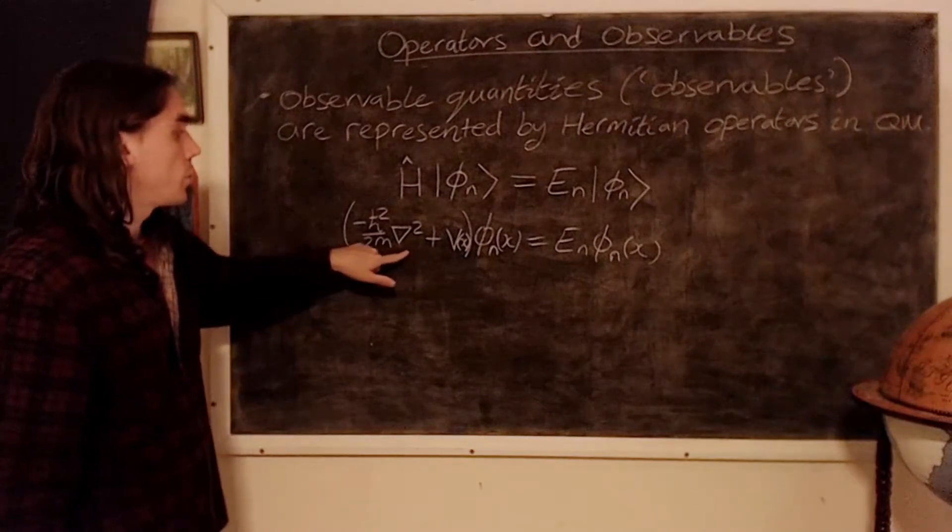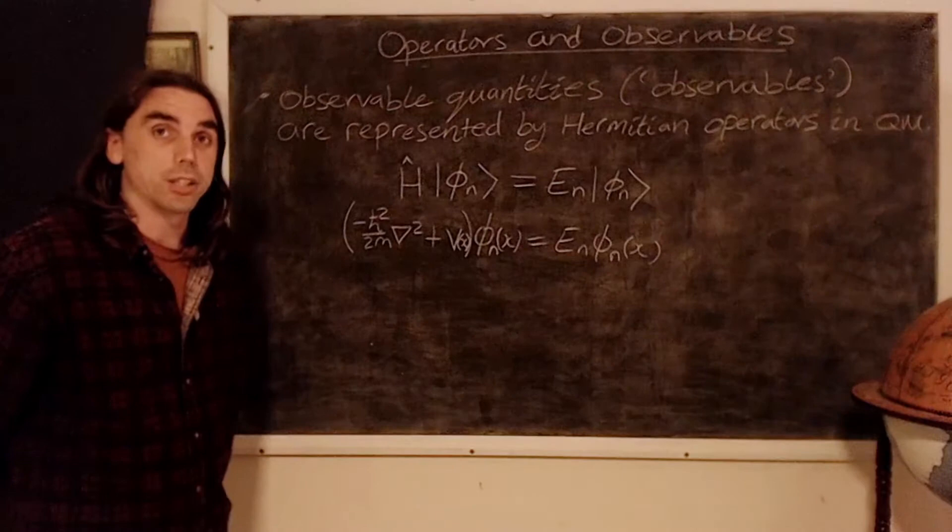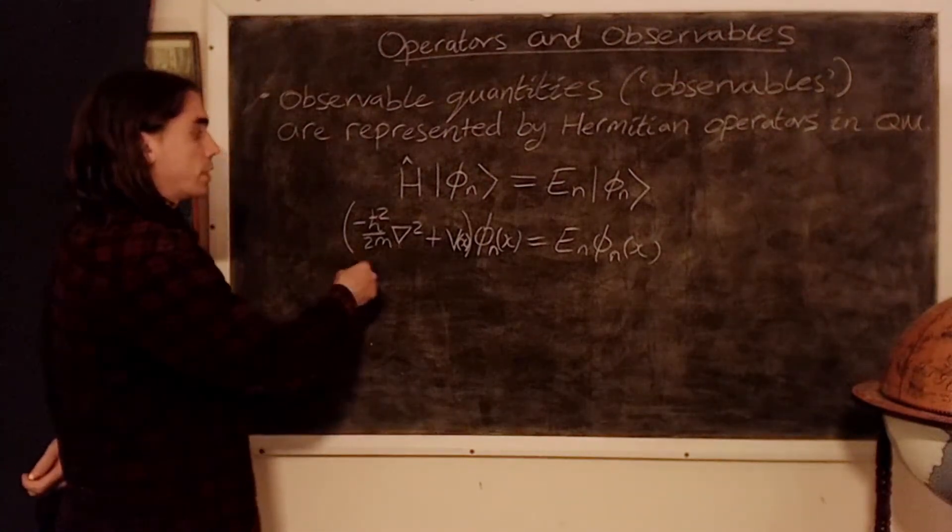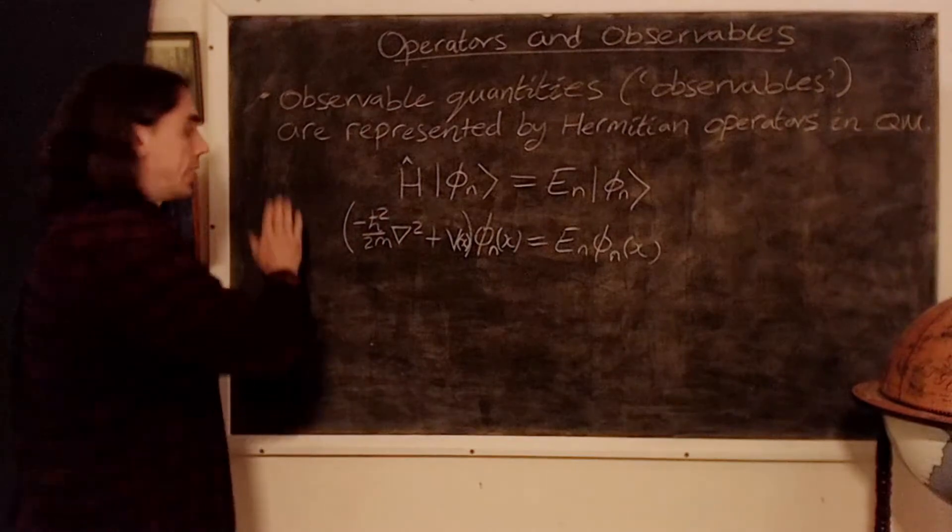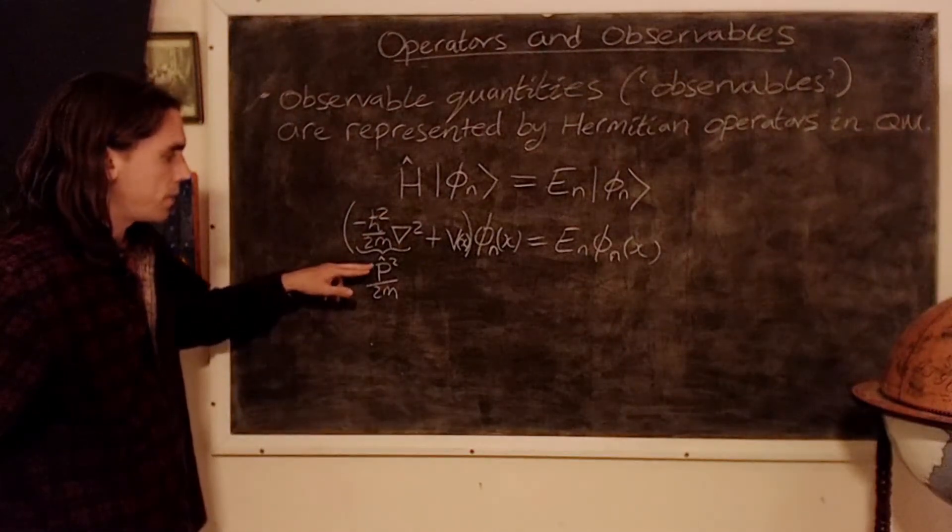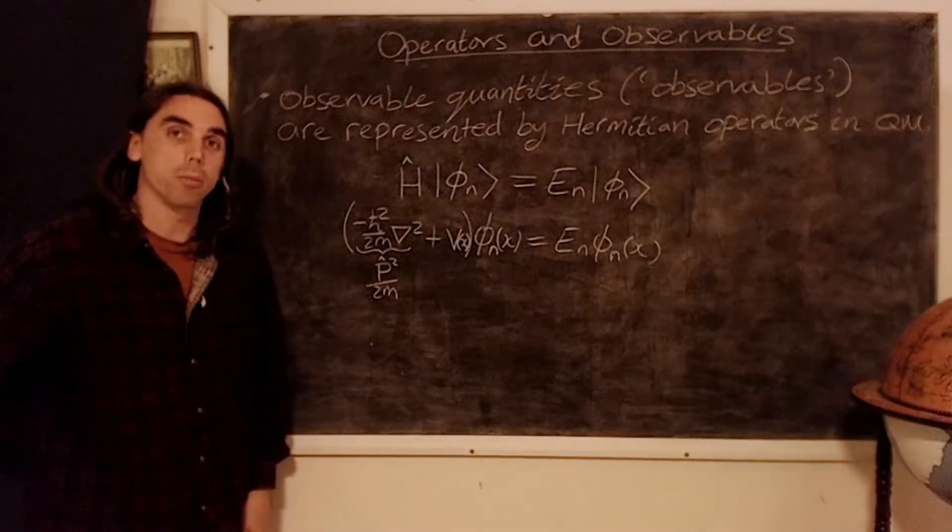we can deduce that this should be the kinetic part. The kinetic energy should be p squared over 2m, so this leads us to deduce that this quantity should probably be written as some operator p, so p-hat, squared over 2m. And this p is what we call the momentum operator.